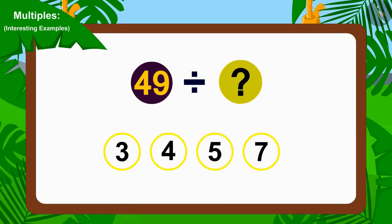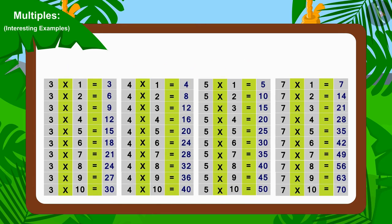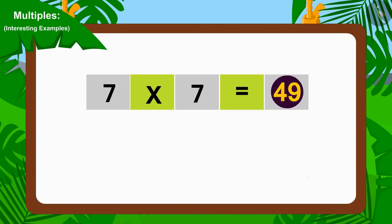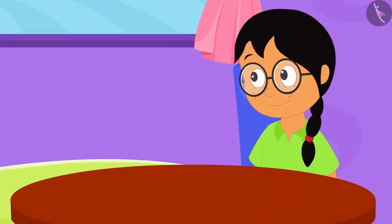To find 49 is a multiple of which of these numbers, we only have to see which number it can be divided by. If we look at the multiplication table of 3, 4, 5, and 7, we will find that the number 49 can be found in the multiplication table of 7 only. So we can say that 49 is a multiple of 7.